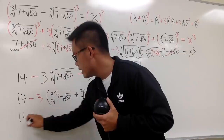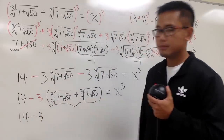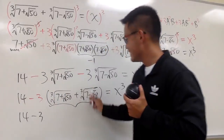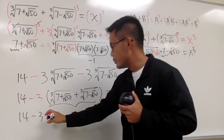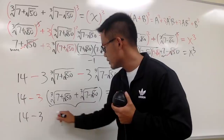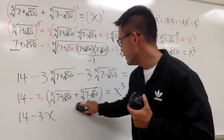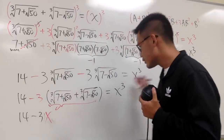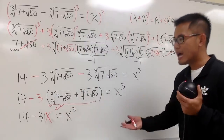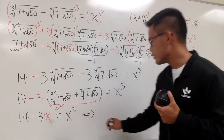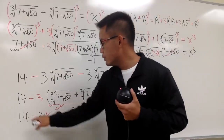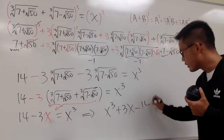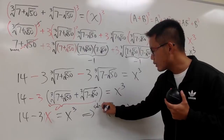So we have 14 minus 3x = x³. Moving terms around: keep x³ on the right, move negative 3x to the other side as plus 3x, and move positive 14 to the other side as negative 14. This gives us x³ + 3x − 14 = 0. Now the question becomes: how can we solve for x from this cubic equation?